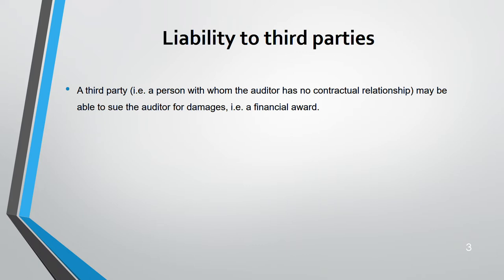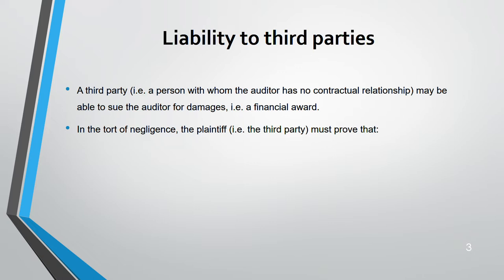Before looking at liability to third parties, let's understand who a third party is. A third party is any person with whom the auditor has no contractual relationship. There is no contract between the auditor and the third party, but they may still be able to sue the auditor for damages in the tort of negligence under UK law. The person who suffers the damage is the plaintiff, and the auditor is the defendant.